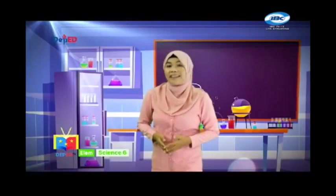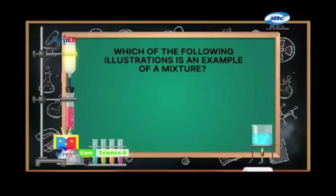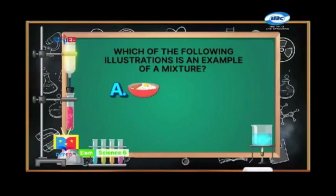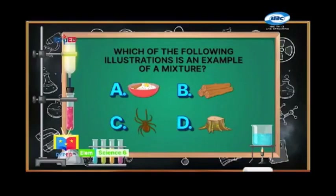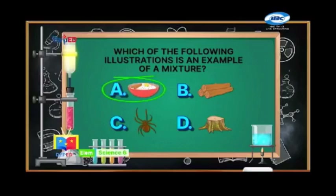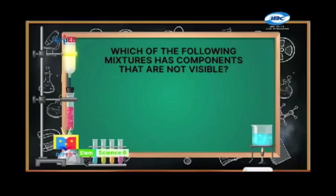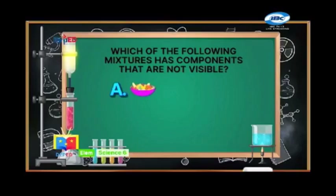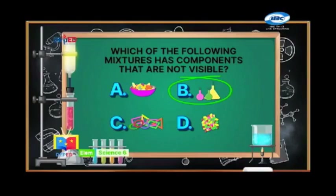Choose the letter of the correct answer. Write your answers on your paper. Number one: Which of the following illustrations is an example of a mixture? The correct answer is A — a bowl of food. Number two: Which of the following mixtures has components that are not visible? The correct answer is Letter B — liquid inside vials.